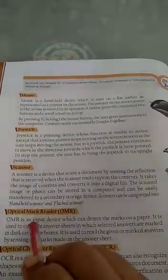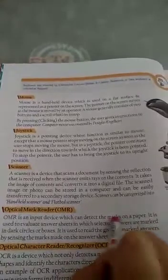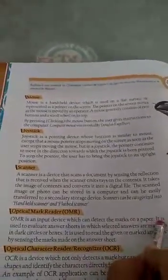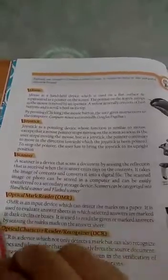The OMR is an input device which can detect these marks on the paper. It is used to evaluate answer sheets in which selected answers are marked in dark circles or boxes. It is used to read the given or marked answers by sensing the marks made on the answer sheet.